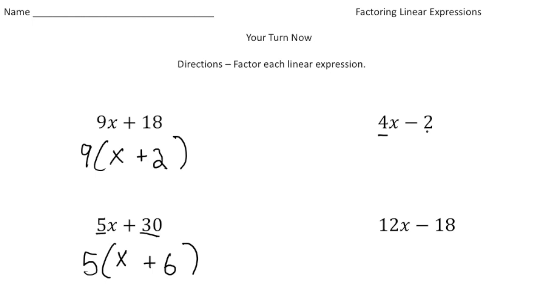Alright, the next one. We have 4 and 2. But again, this time, we're going to have a parentheses with a subtraction sign here. So the GCF of 4 and 2 is 2. And now 2 times, let's see, 2x is going to be 4x. And then 2 times 1 will give us the 2. So it's going to be 2 times 2x minus 1. That's our factored expression.